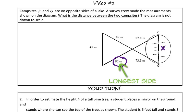92 is the longest length in the triangle on the left. So what I'm looking for is a corresponding side of the triangle on the right, which means I should look for the longest side, which would be 82.8. So now I'm going to set up my proportion.